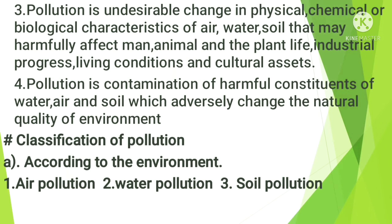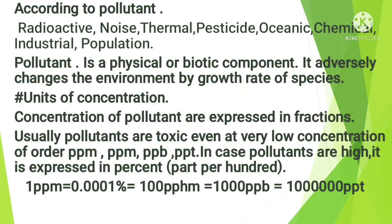Next, we look at the classification of pollution. Classification is done using two approaches. First, according to the environment: there are three types — air pollution, water pollution, and soil pollution. Second, according to the pollutant: there are many types, including radioactive, noise, thermal, pesticide, oceanic, chemical, industrial, and population pollution. A pollutant is a physical or biotic component that adversely changes the environment by altering the growth rate of species.